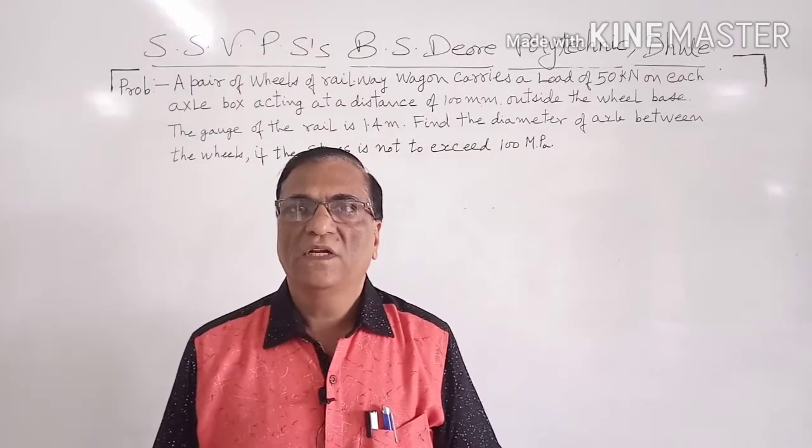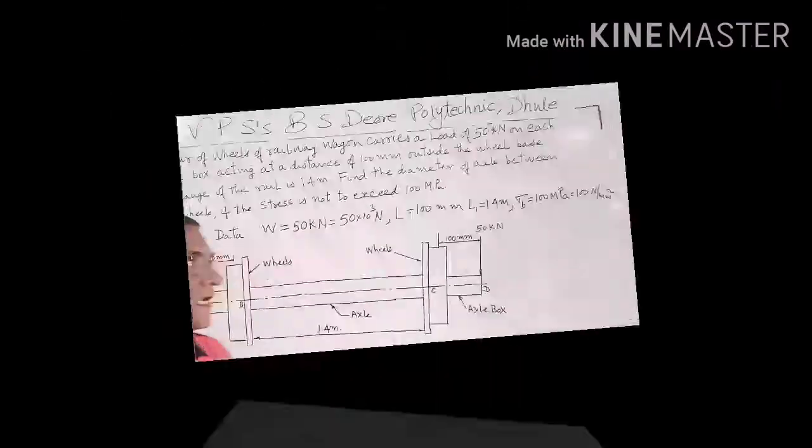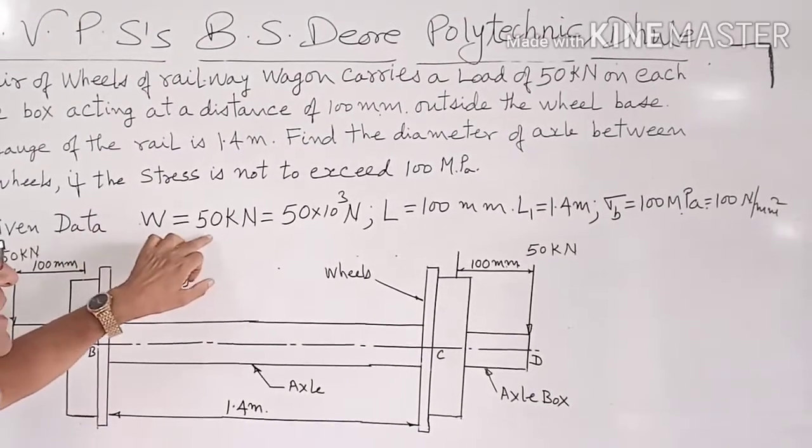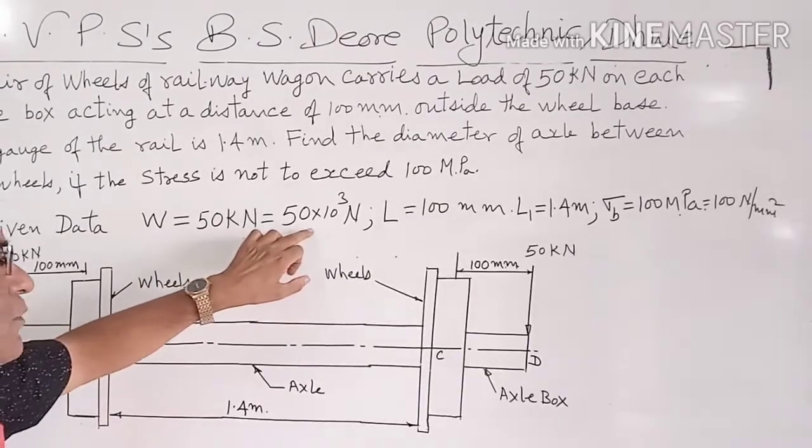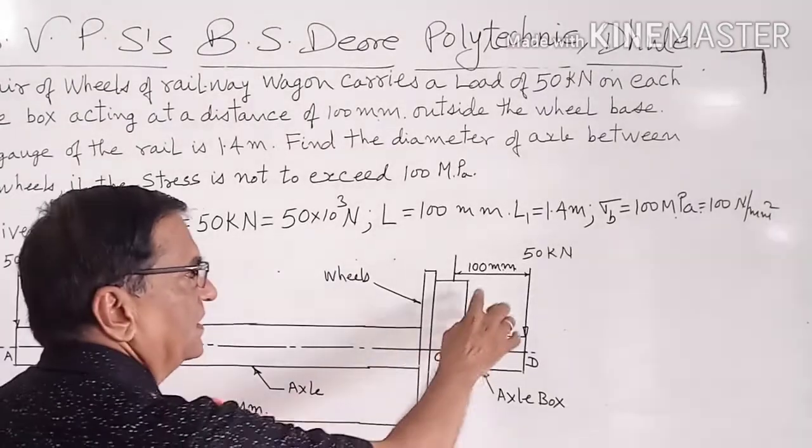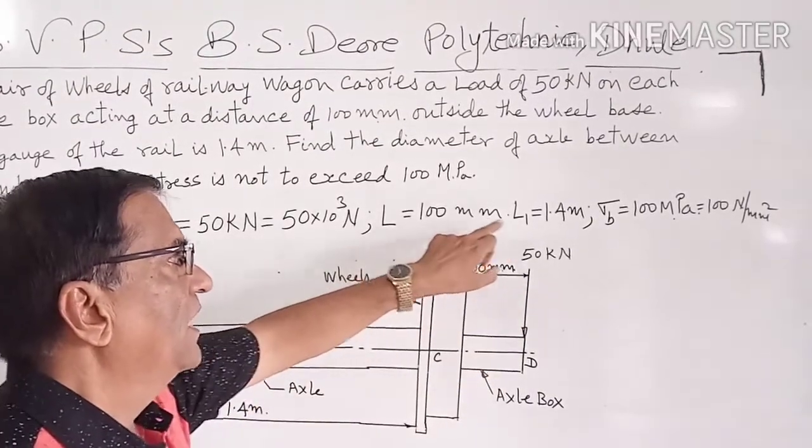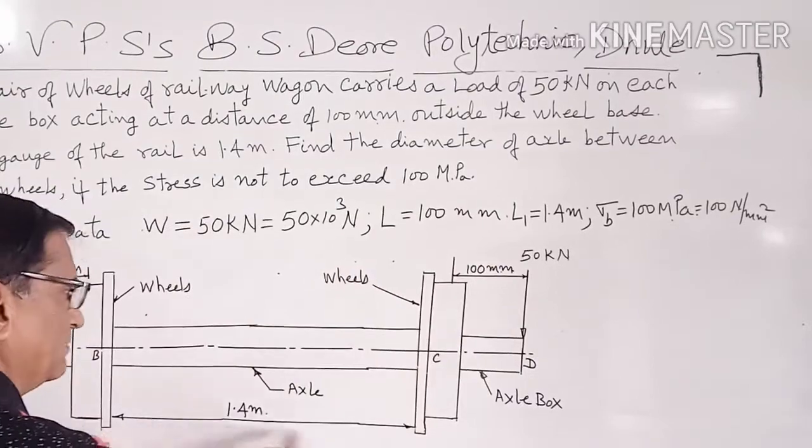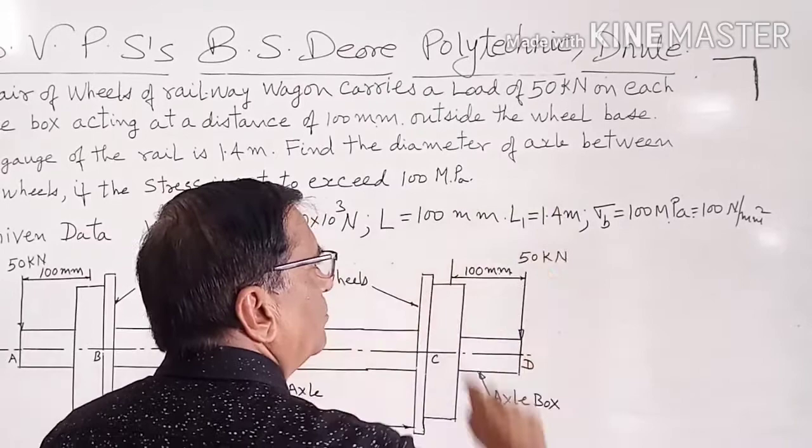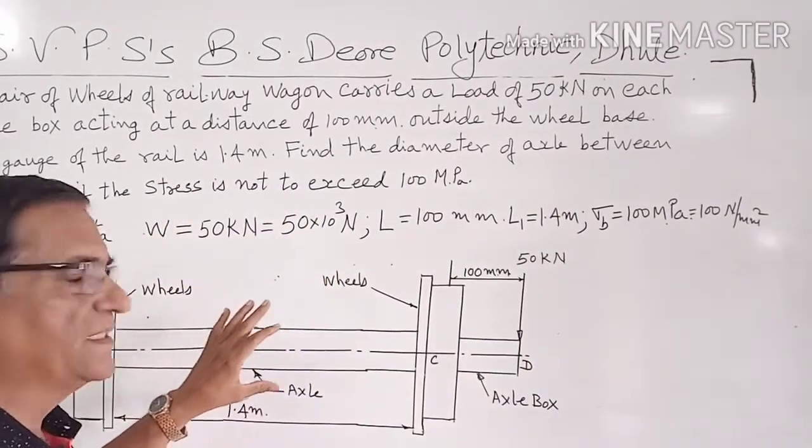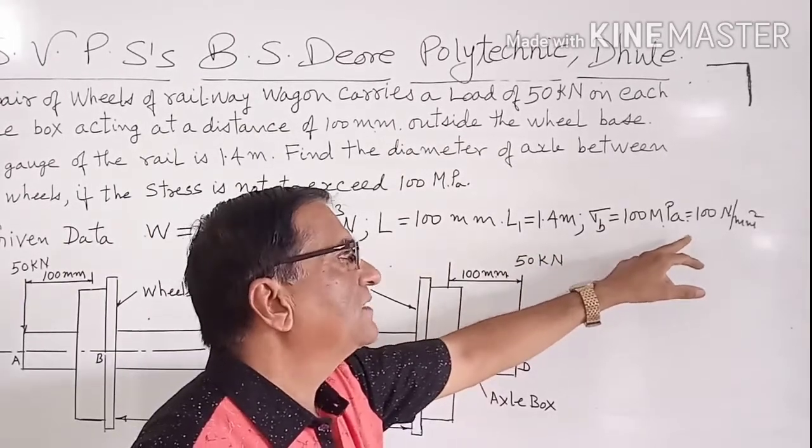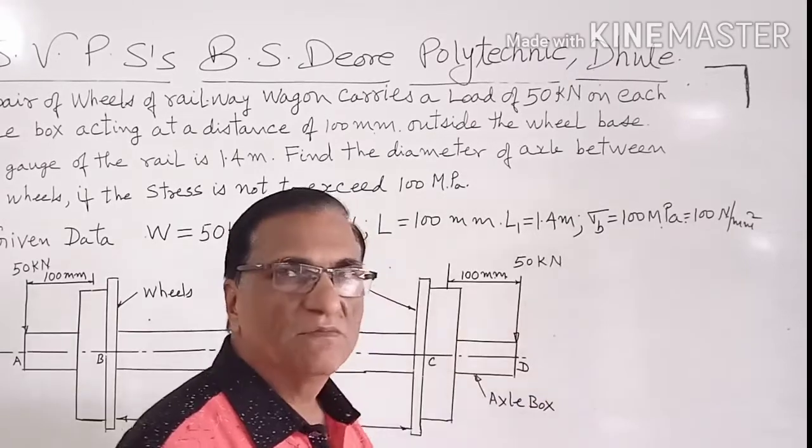Before solving the problem we will write down the data given. Load W is equal to 50 kN, that is 50 into 10 raise to 3 N. L, this distance, is 100 mm. L1, the distance between the wheels, is equal to 1.4 meter. And maximum stress, sigma b, is equal to 100 MPa, so that is equal to 100 N per mm square.